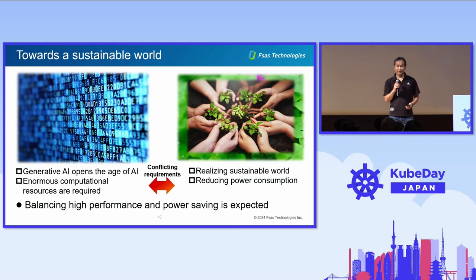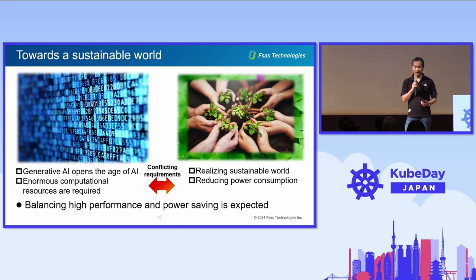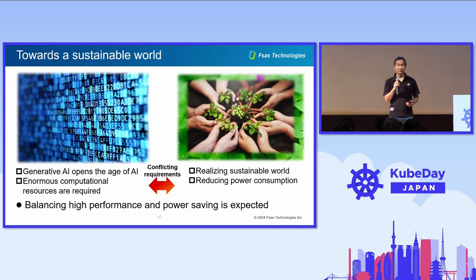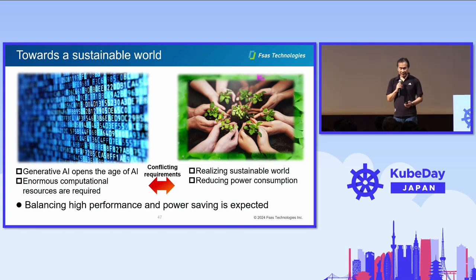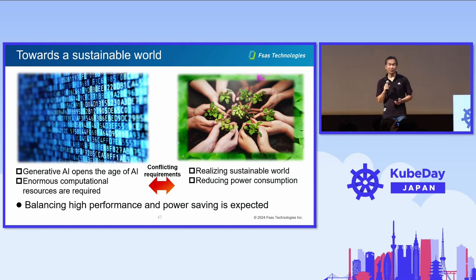Recently, generative AI opened the age of AI and as a result enormous computational resources are required. This needs lots of power to operate. On the other hand, realizing a sustainable world is an urgent issue for us. We are always expected to reduce power consumption. That means we need to satisfy higher performance and power saving simultaneously to cope with these conflicting requirements.